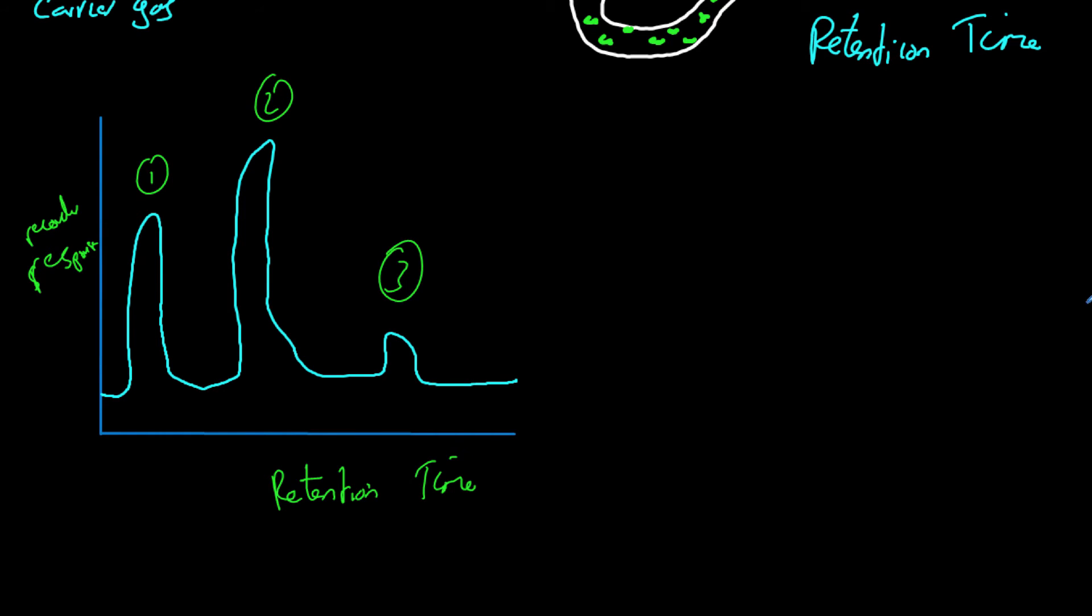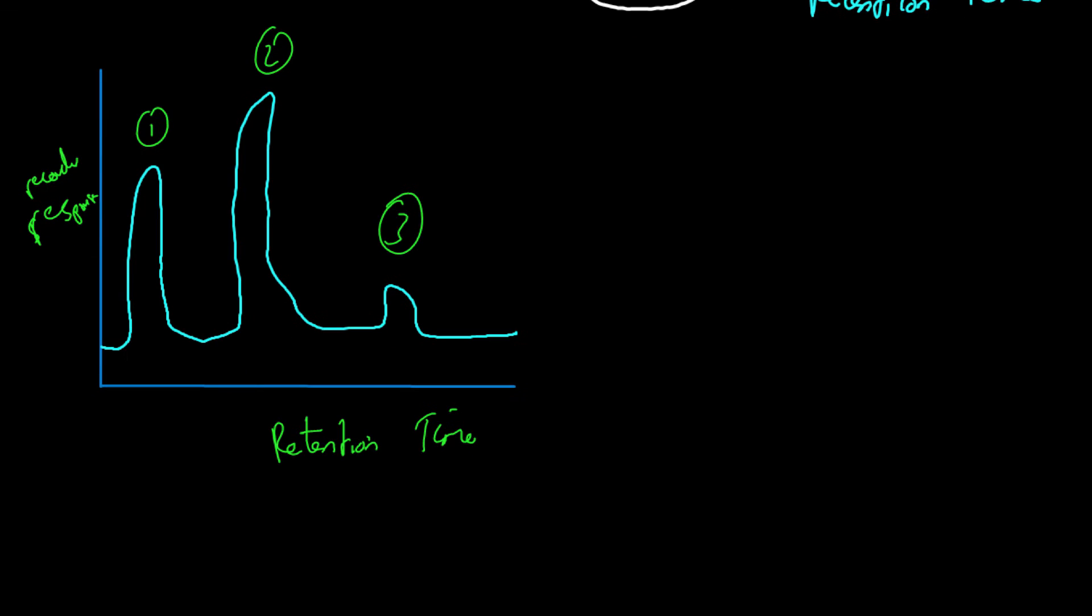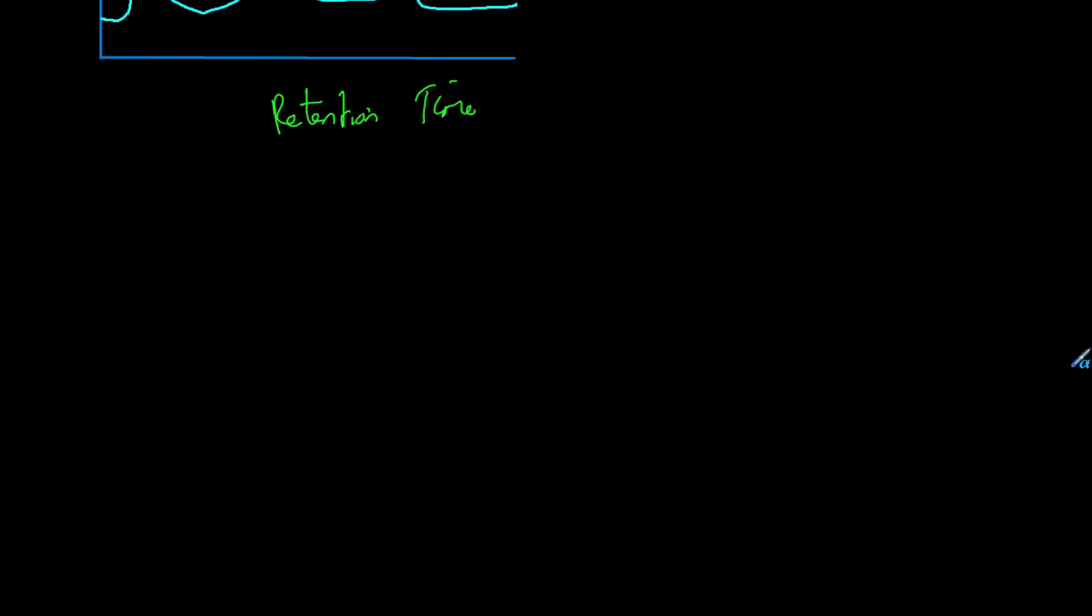Now this is all well and good, but it doesn't differentiate between two substances which are very similar. And also, it won't tell us exactly how big a substance is or anything else if we haven't got a reference sample for that substance. So often, we couple with something known as mass spectrometry.